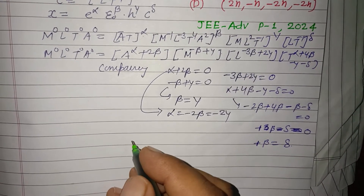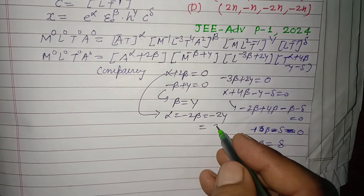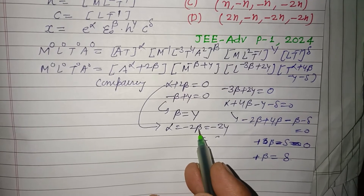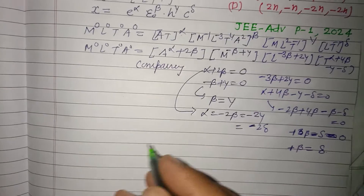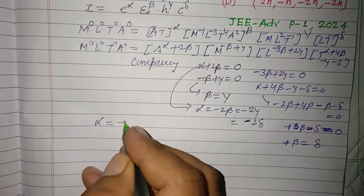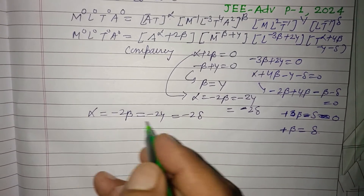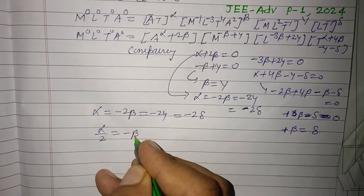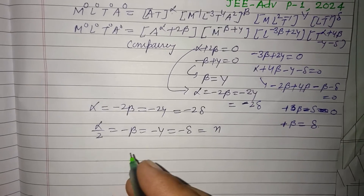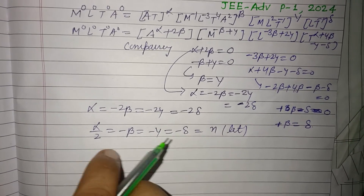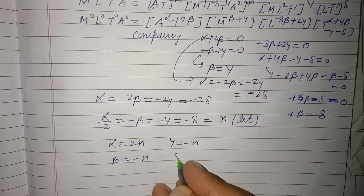Putting it all together: since minus 2 beta equals alpha, and beta equals delta, we get alpha equal to minus 2 delta. So finally: alpha equals minus 2 beta, equals minus 2 gamma, equals minus 2 delta. Dividing by 2: alpha over 2 equals minus beta equals minus gamma equals minus delta, let this equal integer n. So alpha equals 2n, beta equals minus n, gamma equals minus n, delta equals minus n.